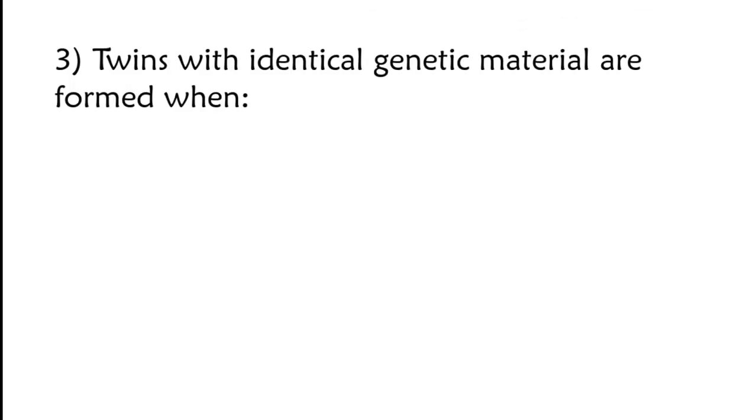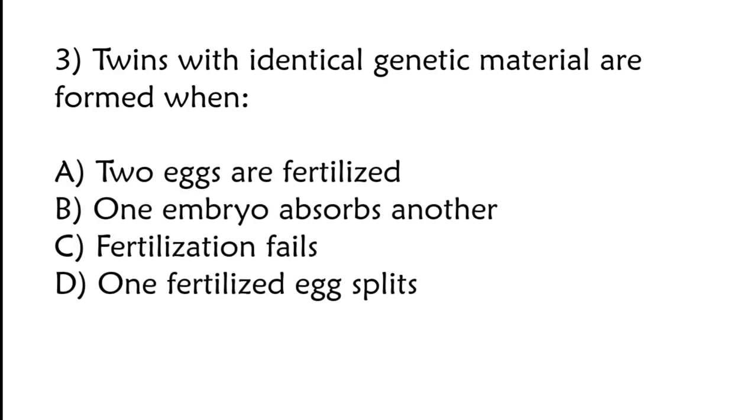Twins with identical genetic material are formed when: two eggs are fertilized, one embryo absorbs another, fertilization fails, one fertilized egg splits? Correct answer is option D, one fertilized egg splits.